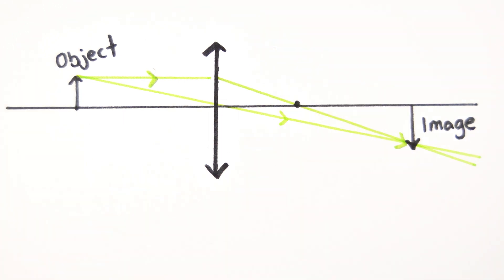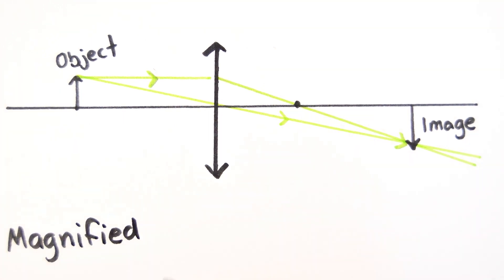Ray diagrams allow us to work out whether the image will be magnified or diminished, upright or inverted, and real or virtual.